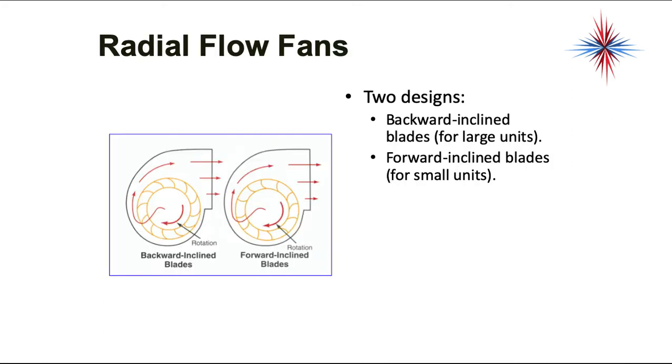There are two designs of radial flow fans: backward inclined blades for larger units, or forward inclined blades for smaller units. This is just how the blades are turned on the blower wheel. It depends on how you're catching and pulling the air.